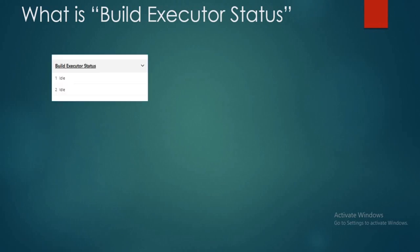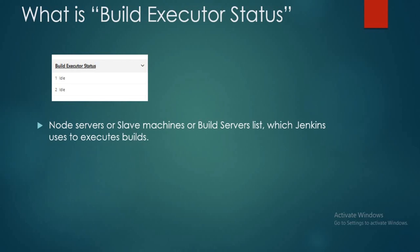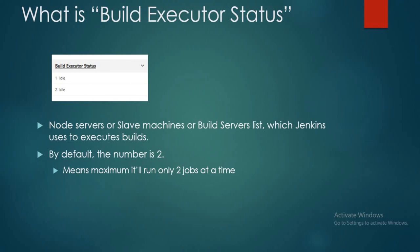Hello, welcome back. Our next question: what is Build Executor Status? We see this on the Jenkins dashboard. It is a list of servers — some organizations call them node servers, slave, or build servers — where Jenkins runs the jobs. If we configure slave machines they come here. Since we have only one server (master), we see only one detail. No name here means it's a master. By default we have two executors — Jenkins will run only two jobs on this server simultaneously.